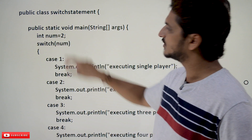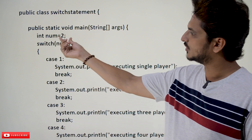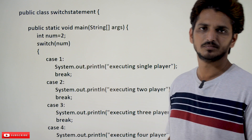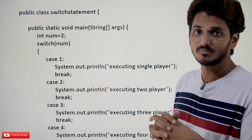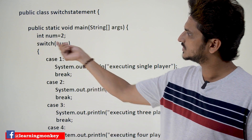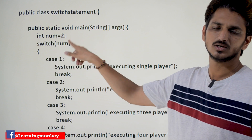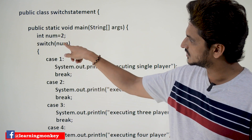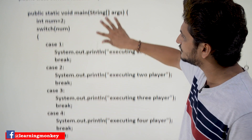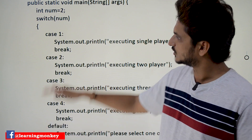So coming to this example: int num is equal to 2, so we are taking some number value. Switch(num) — the value present in num is 2. If num is equal to 1, switch 1; if num is equal to 5, switch 5. So whatever value num holds, that is what goes into the switch.